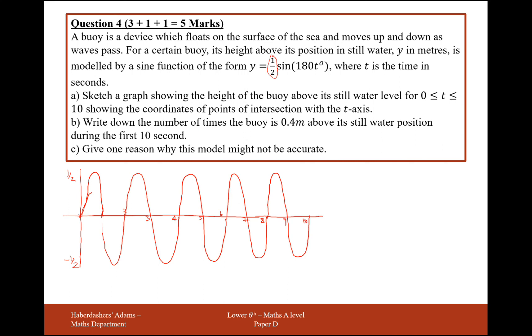Part (b): Write down the number of times the buoy is 0.4 meters above its water position during the first 10 seconds. So 0.4, that's a bit less than 0.5. So once, twice, three times, four times, five times, six times, seven times, eight times, nine times, ten times.